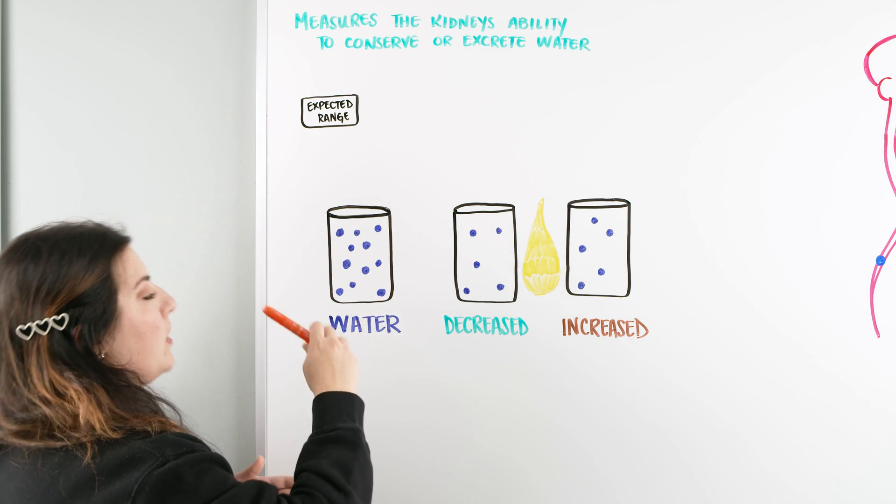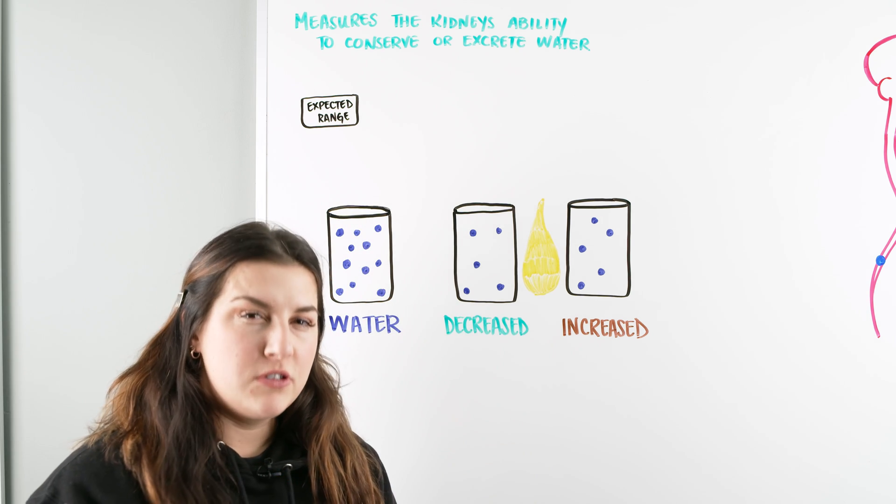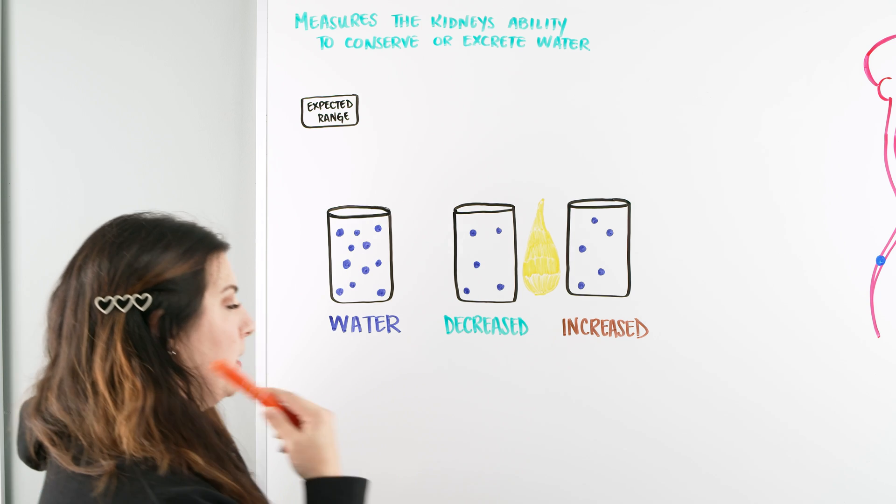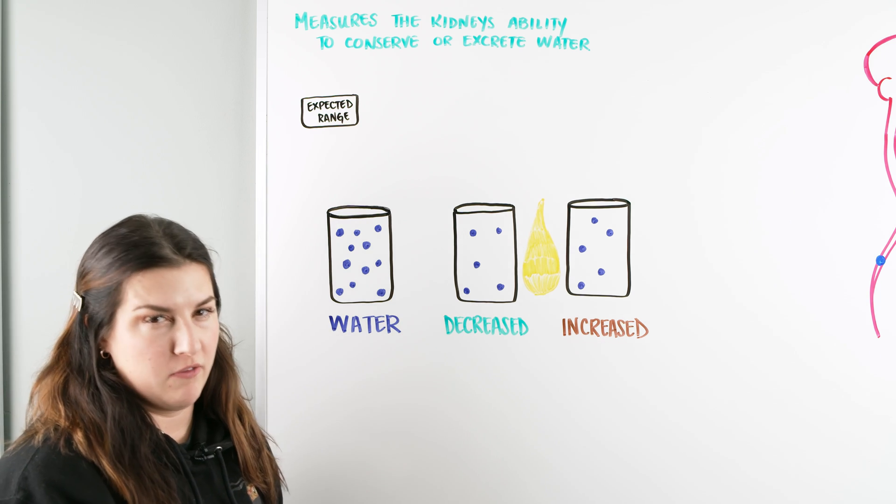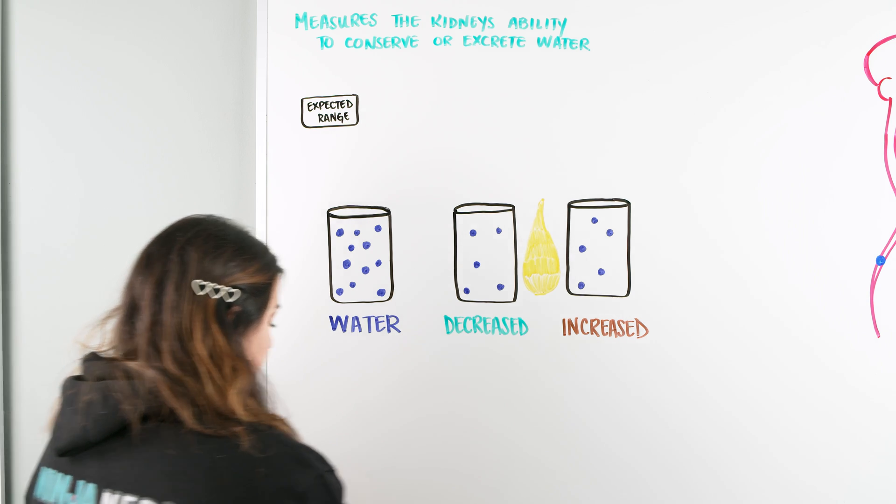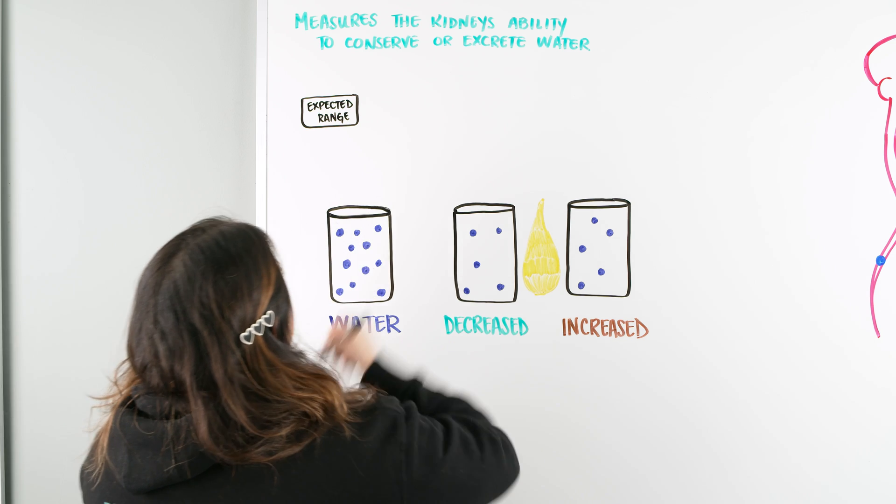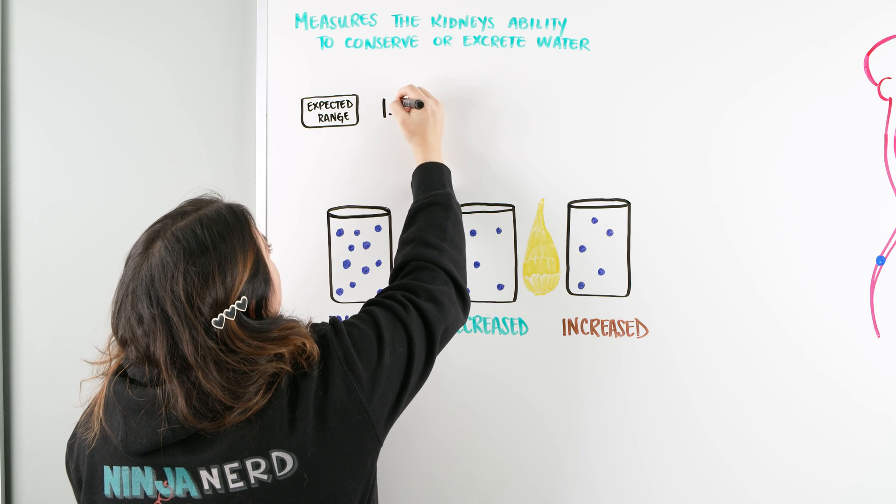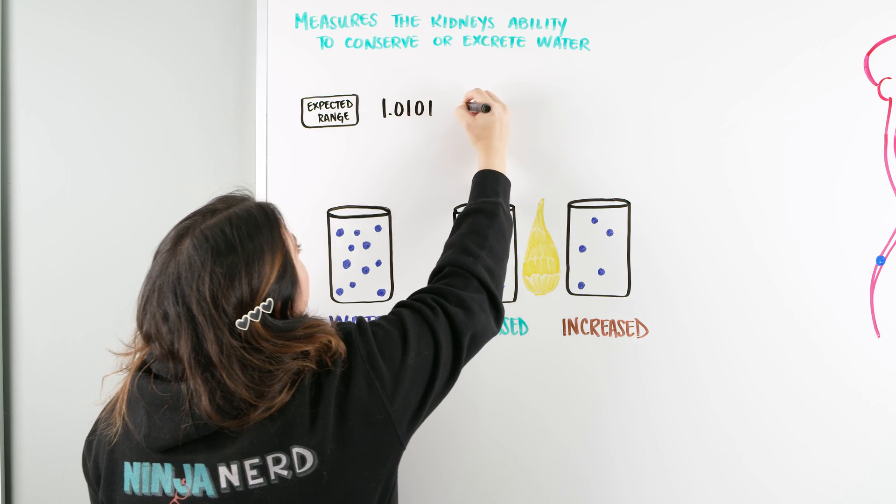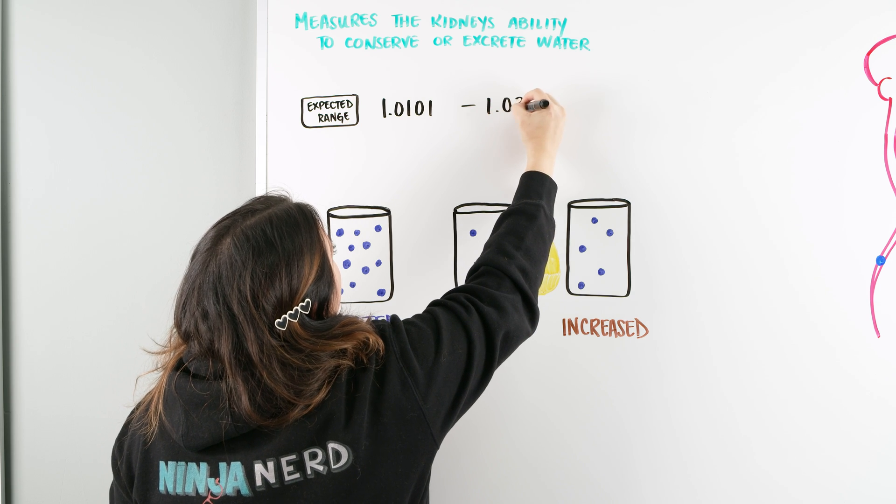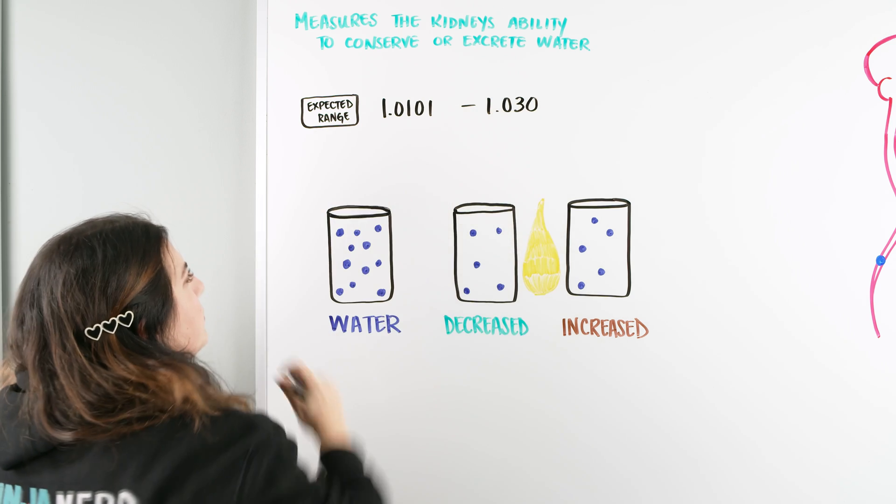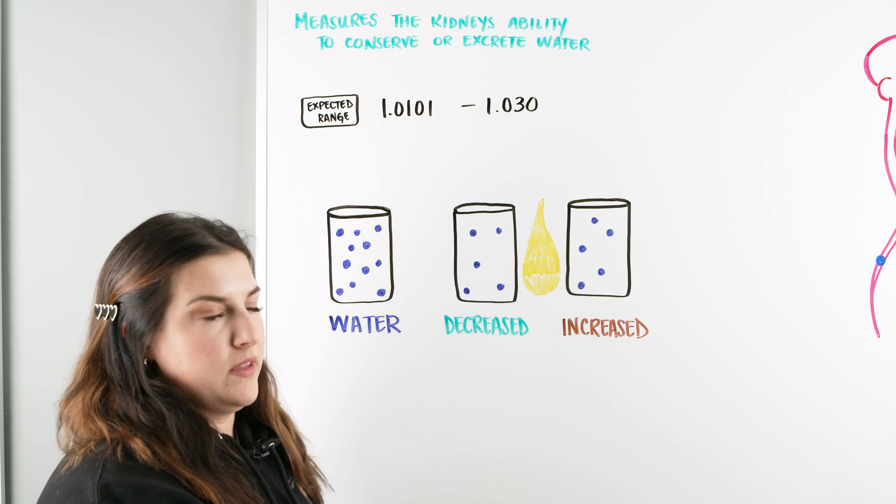So when we are measuring, we have an expected range that we're used to know, especially for nursing school, they really drive home the urine specific gravity range. So we're going to quick write that down. Our urine specific gravity typically is anywhere from 1.010 to 1.030. You're going to notice it's a really small range, a really small amount of numbers can fit in between there.